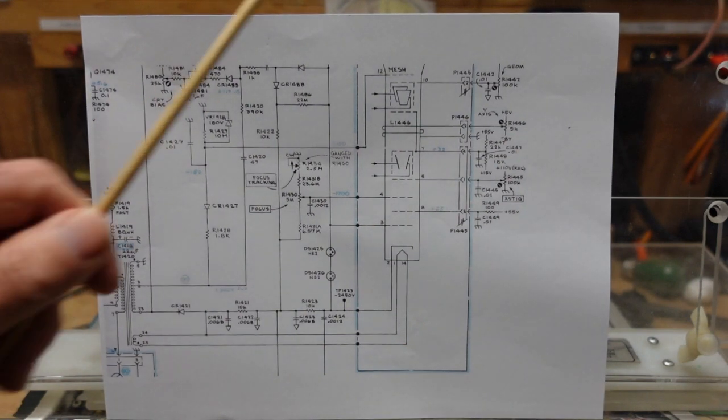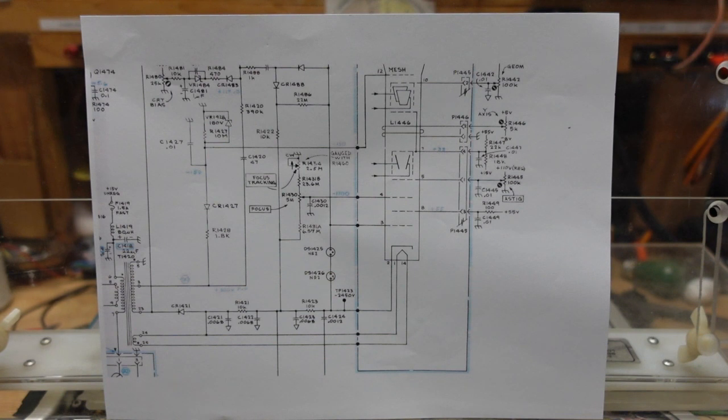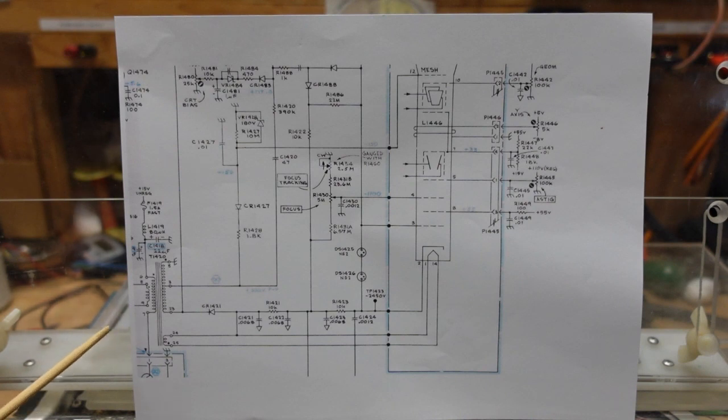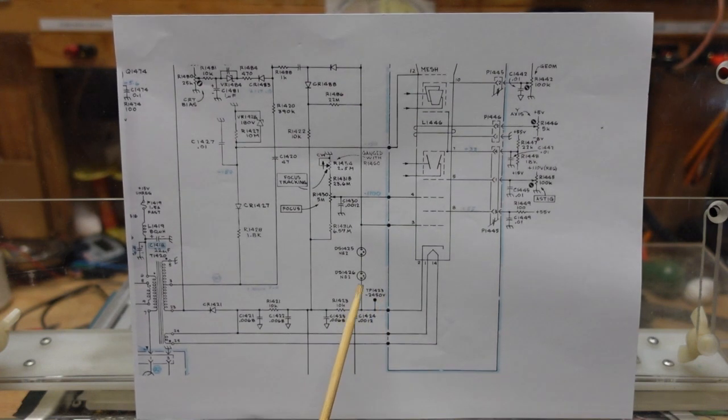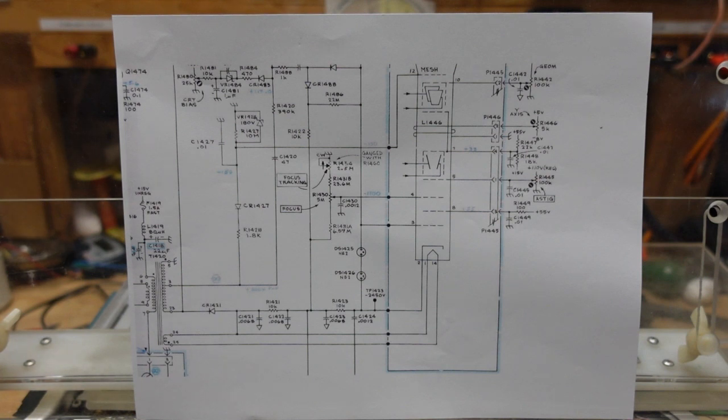This is a partial shot of the high voltage section and CRT of the Tek 465 we currently have on the bench. Most scopes use a scheme like this where they have a transformer that they drive with an oscillator, and what it does is it allows us to step up the voltage here on the secondary side. But there's always a trade-off: we get higher voltage but lower current, which is fine. CRTs are high impedance devices so we just need voltage. You see here that we have a test point that is negative 2450 volts, and we're going to test that.